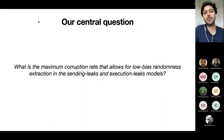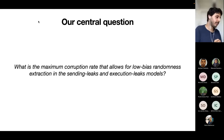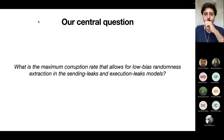Our main question is quite natural: we want to understand what is the maximum corruption rate we can handle and still get low-bias randomness extraction or public coin tossing in both the sending leaks and execution leaks models.